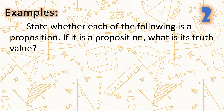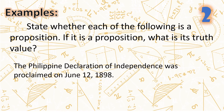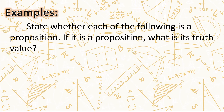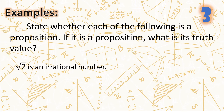Number two: 'The Philippine Declaration of Independence was proclaimed on June 12, 1898.' This is a proposition, and its truth value is T because this is true. Number three: 'Square root of two is an irrational number.' A declarative sentence — this is a proposition, and its truth value is true.